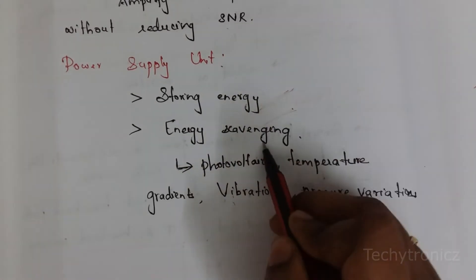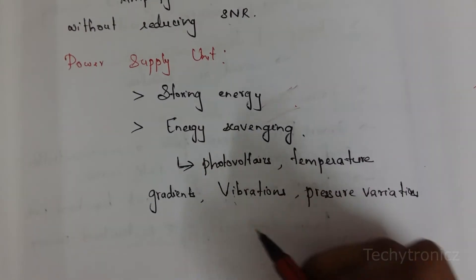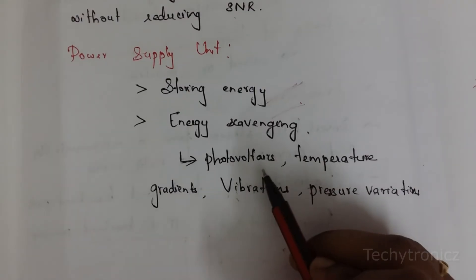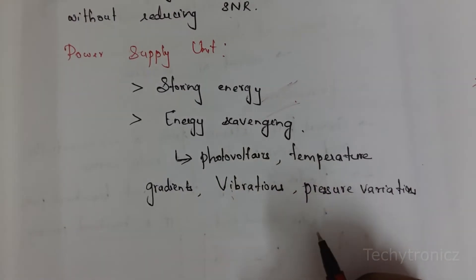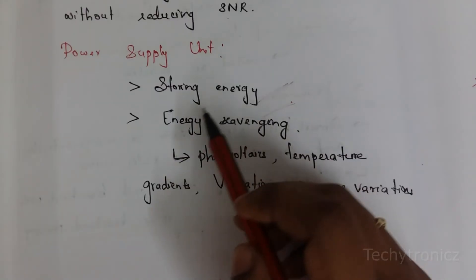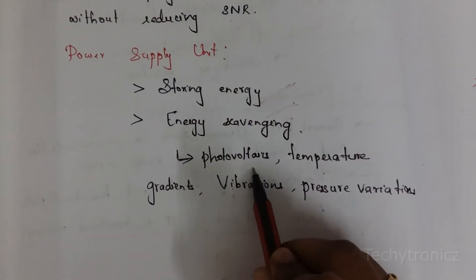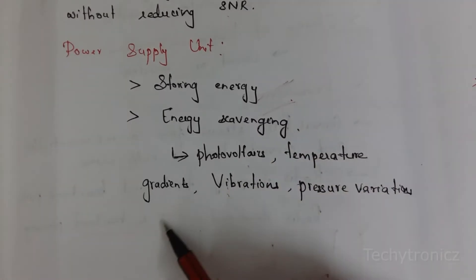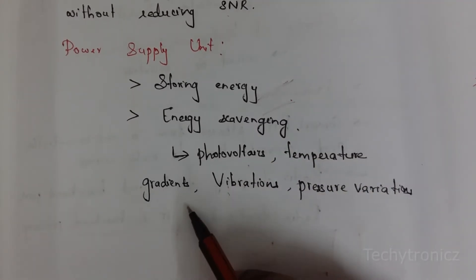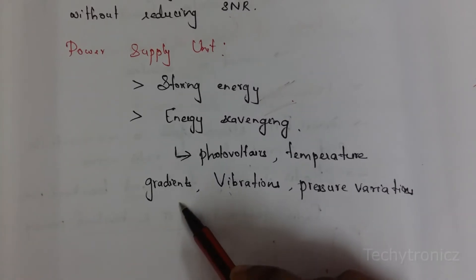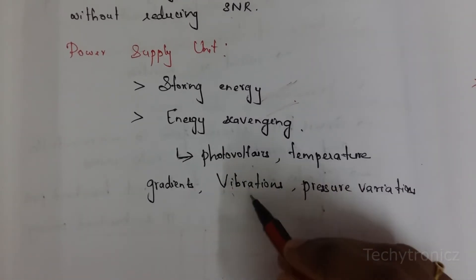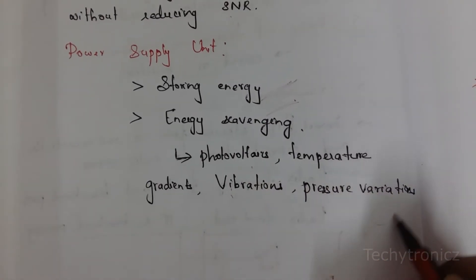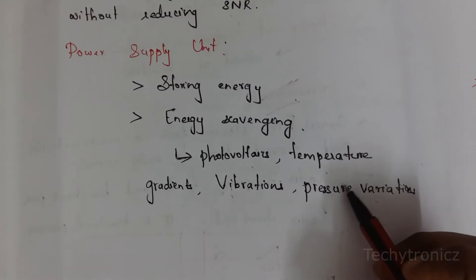Energy scavenging involves extracting energy from the surrounding environment to recharge the power supply. Examples include solar cells and photovoltaics. Temperature gradients — differences in temperature — can be converted to electrical energy. Mechanical vibrations can also be converted to electrical energy, and pressure variations can be used to generate electrical energy.